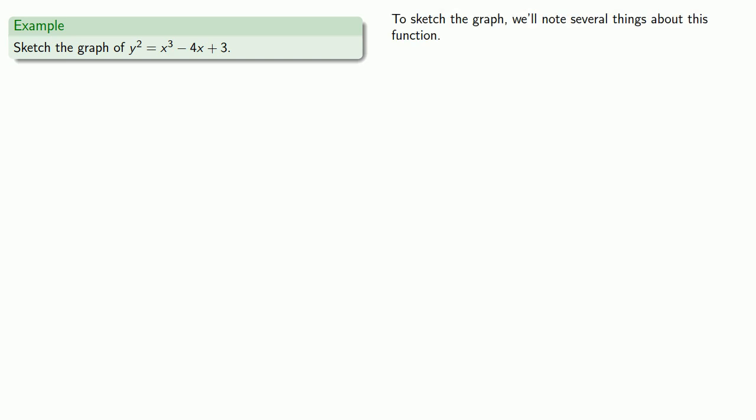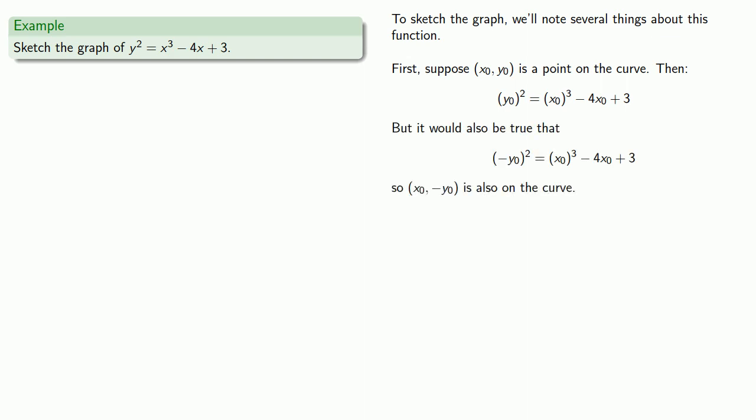To sketch this graph, we'll note several things about the function. First, suppose (x₀, y₀) is a point on the curve. Then the x and y values make the equation defining the curve a true statement. But if this statement is true, notice that this statement is also true for (x₀, -y₀), which means this point is also on the curve. This tells us that if (x₀, y₀) is on the curve, so is (x₀, -y₀), which means the graph is symmetric about the x-axis.